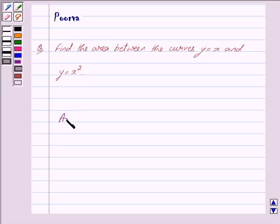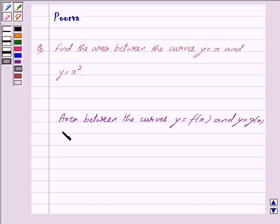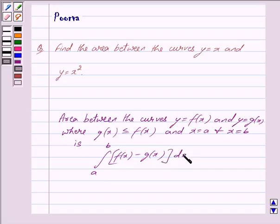The area between the curves y equals f(x) and y equals g(x), where g(x) is less than or equal to f(x), and x equals a and x equals b, is given by the integral from a to b of f(x) minus g(x) dx, where b is greater than a in interval [a,b].